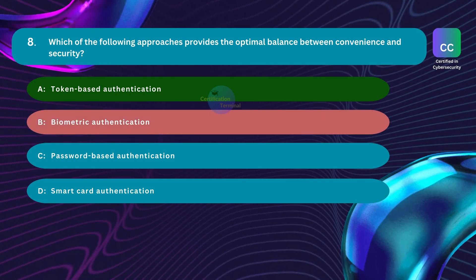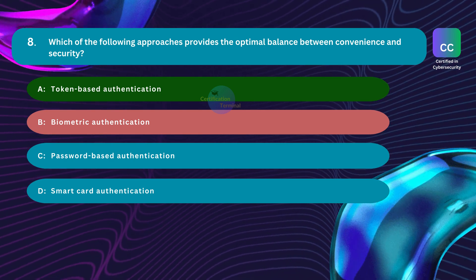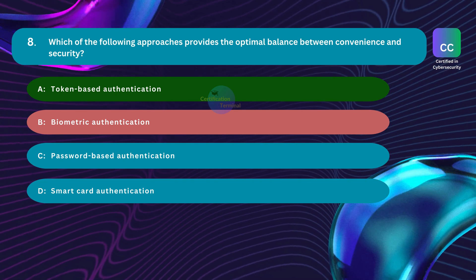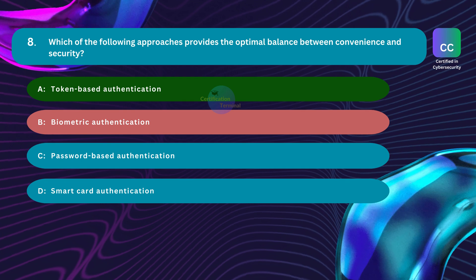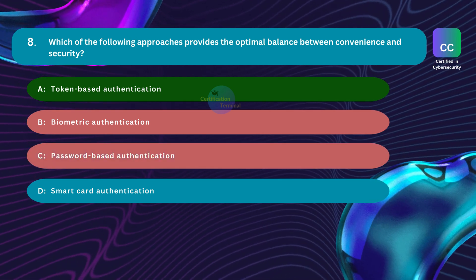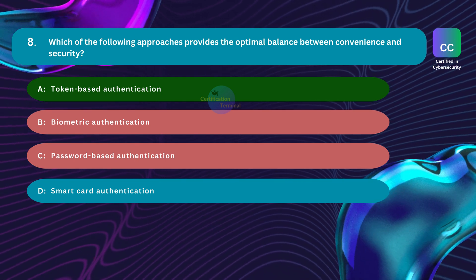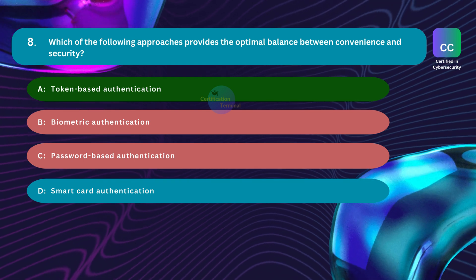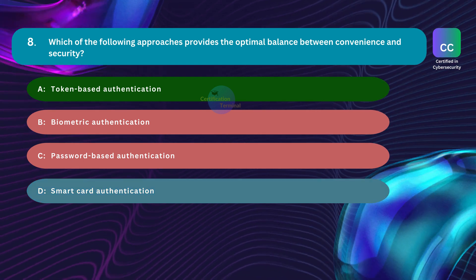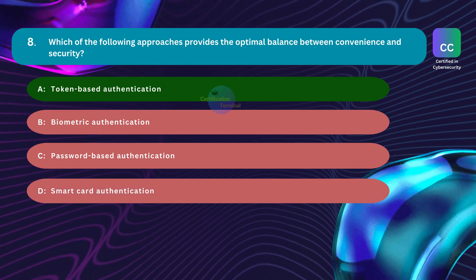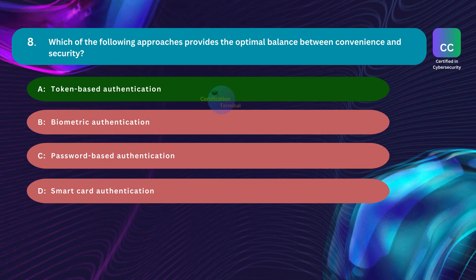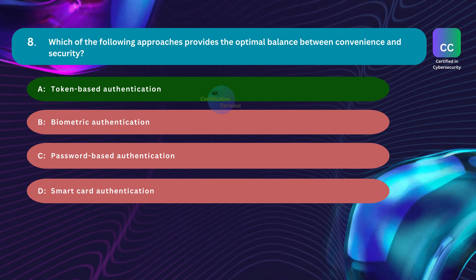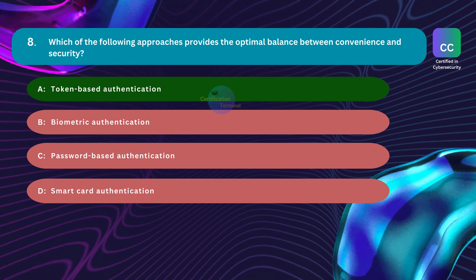Users have a tangible device such as a key fob or mobile app that generates codes, making it convenient while adding an extra layer of security beyond traditional passwords. Option B, biometric authentication, is incorrect — it can be highly secure, but convenience may vary due to environmental factors affecting recognition accuracy. Option C, password-based authentication, is incorrect — it is convenient but may not provide optimal security, especially with weak passwords vulnerable to brute force or phishing. Option D, smart card authentication, is incorrect — while it offers enhanced security, carrying a physical card may be less convenient.